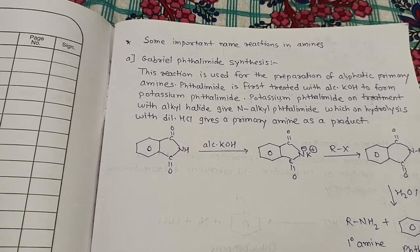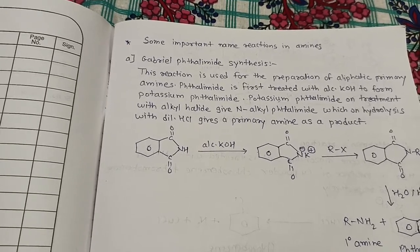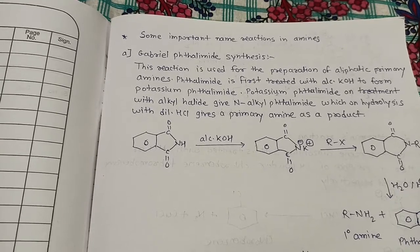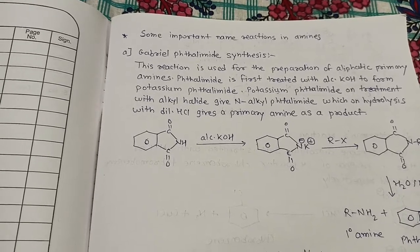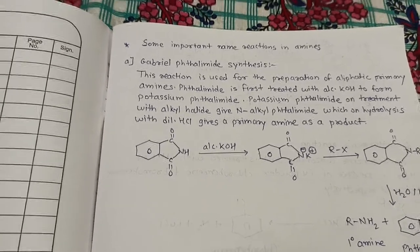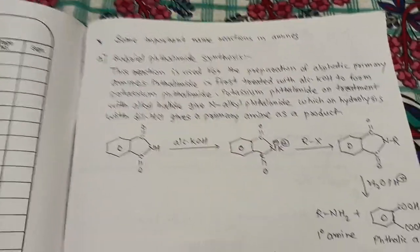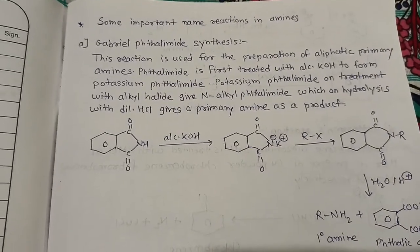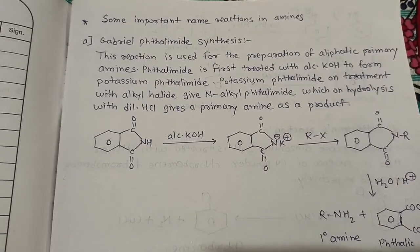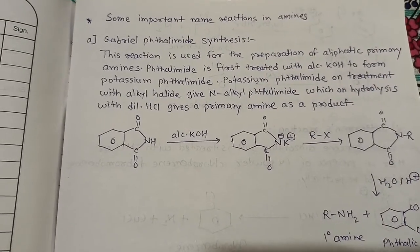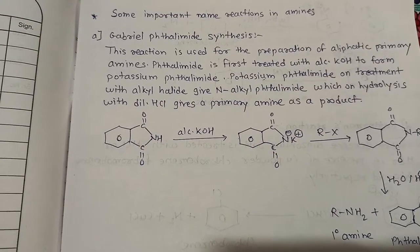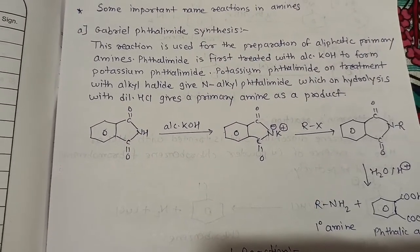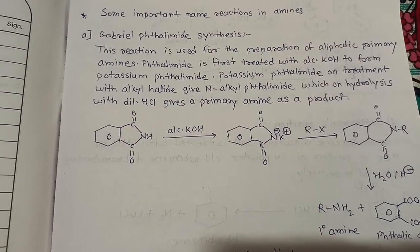Hello guys, today we'll see some important name reactions in amines. The general formula of amine is NH₂. The first name reaction is Gabriel phthalimide synthesis. This reaction is used for the preparation of aliphatic primary amines.